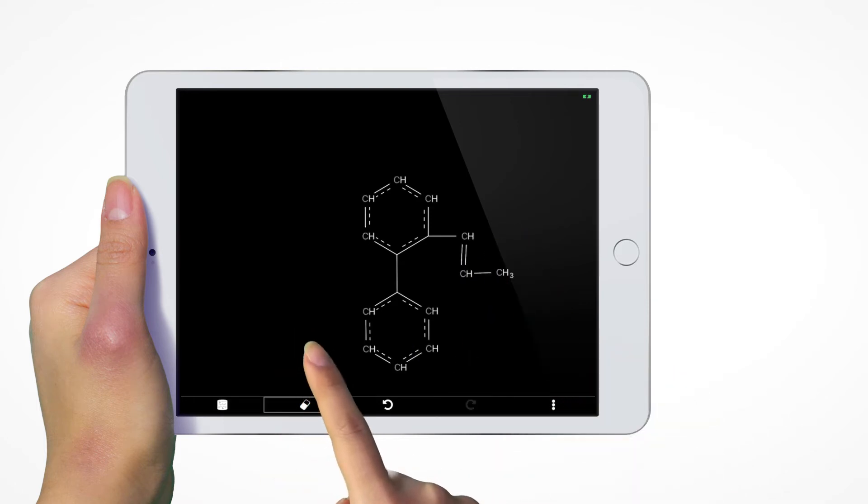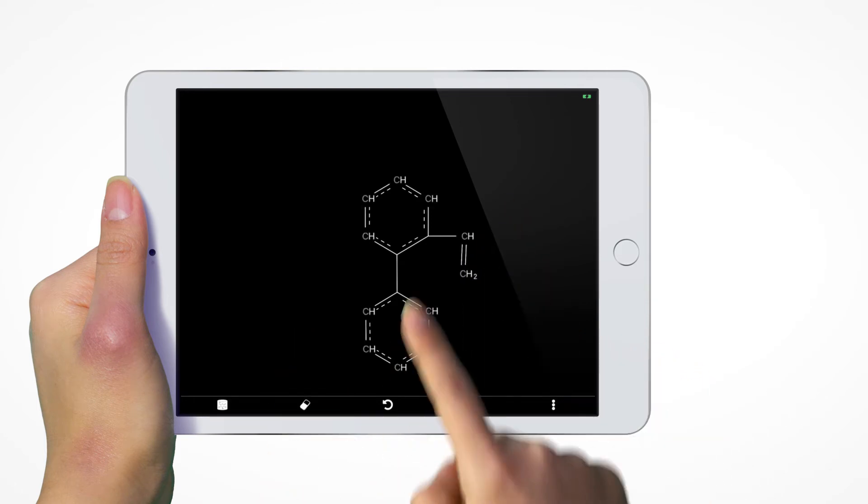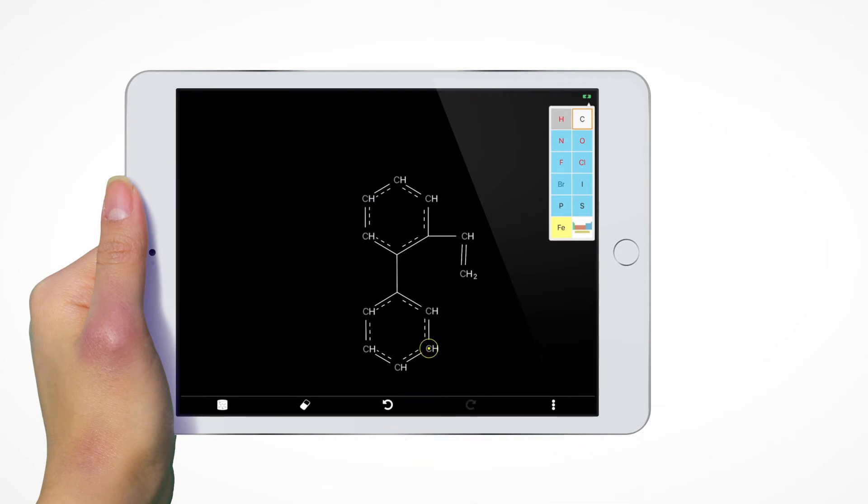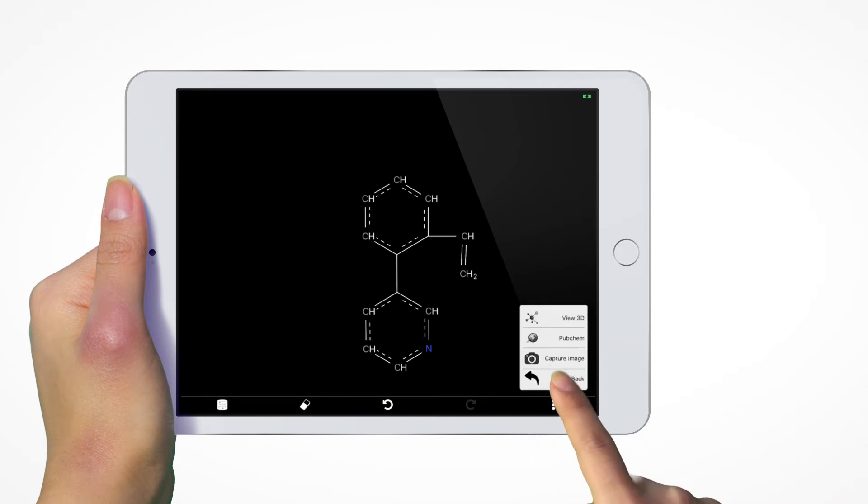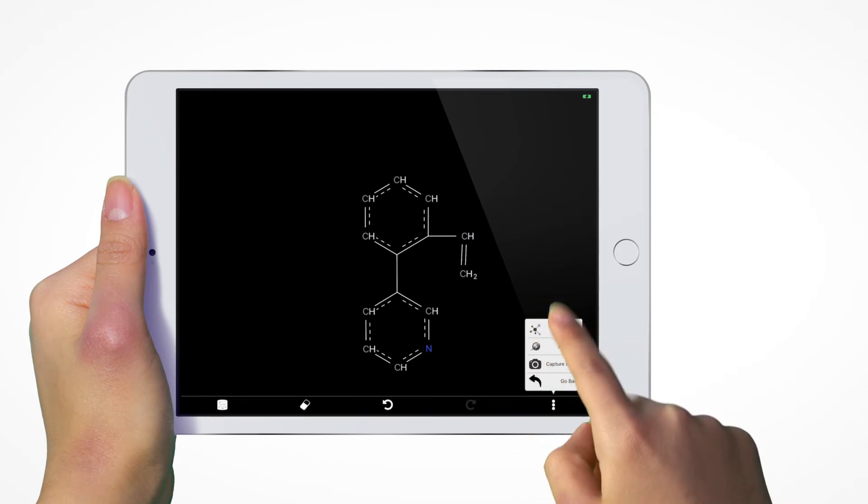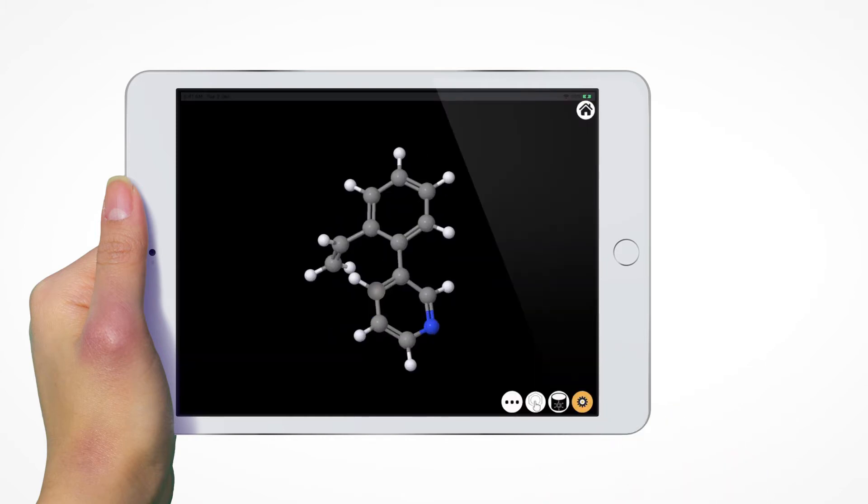You can use either the eraser or back button to edit the molecule. You can also change the atom type. Once done, tap on the lower right corner button to view all available options. Click view 3D to have the 2D drawing converted to the respective 3D structure.